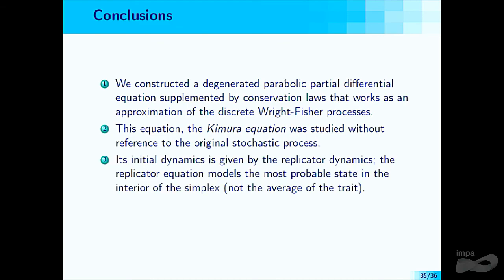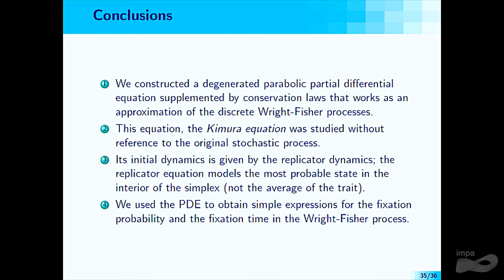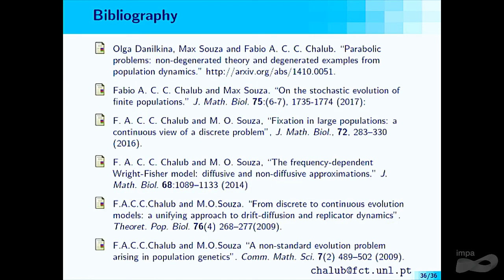In summary: the Kimura equation is a degenerate parabolic PDE supplemented by conservation laws from the stochastic process. The replicator equation models the most probable state in the interior of the simplex — not the average trait. The Kimura PDE yields simple expressions for fixation probability and fixation times for the Wright-Fisher process. What remains is the Jordan-Pindeler-Otto formalism to complete the discrete-time variational picture. Thank you for your attention.